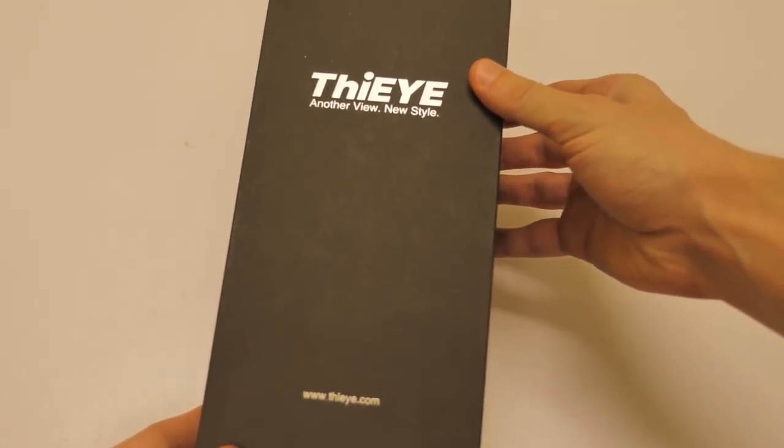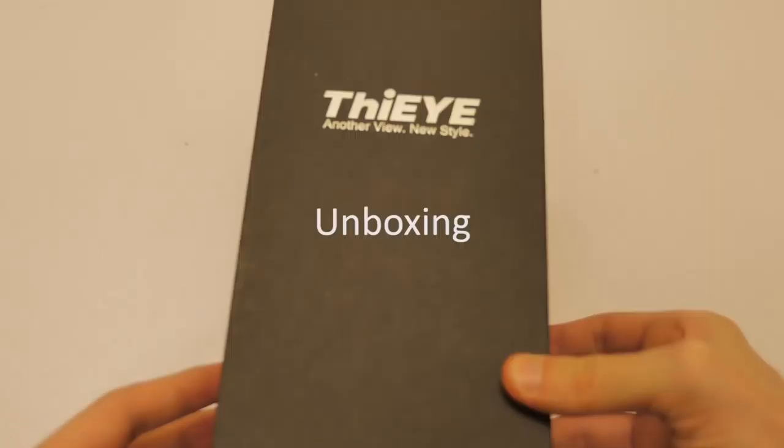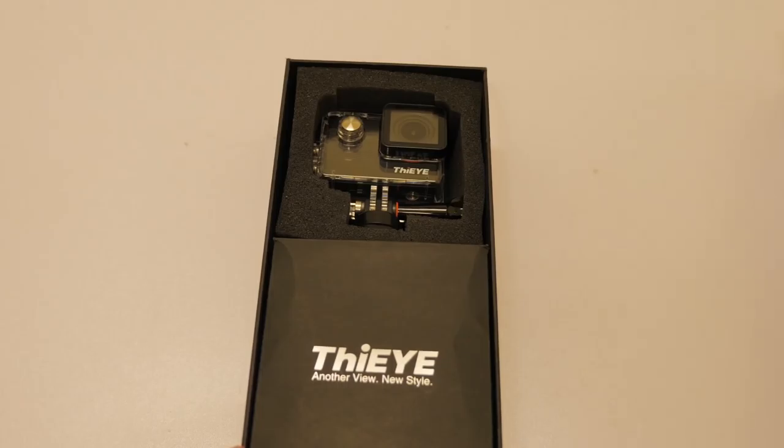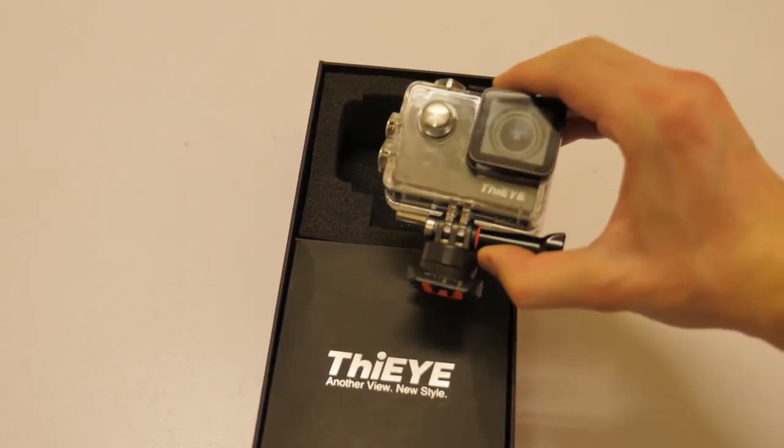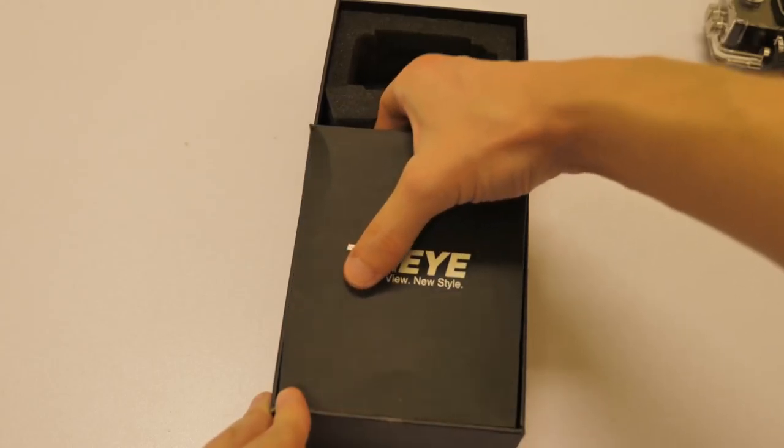And just when you thought you'd seen it all, here I am with the iE7 action camera. Here's the box, another view, new style. Let's open it up and take a look at what's inside. Here's the camera in its waterproof casing.